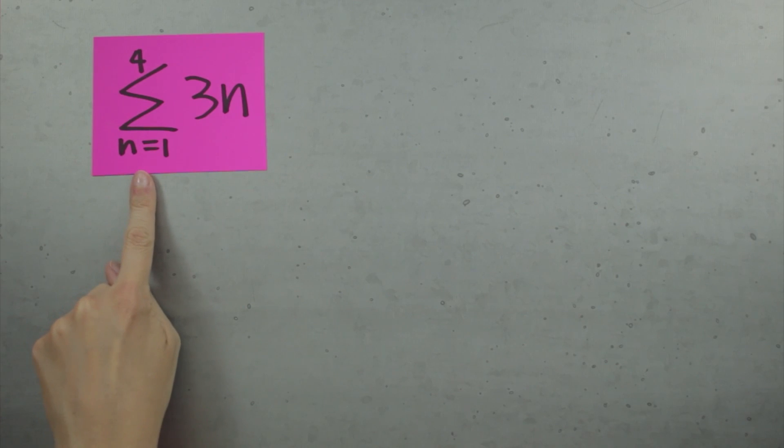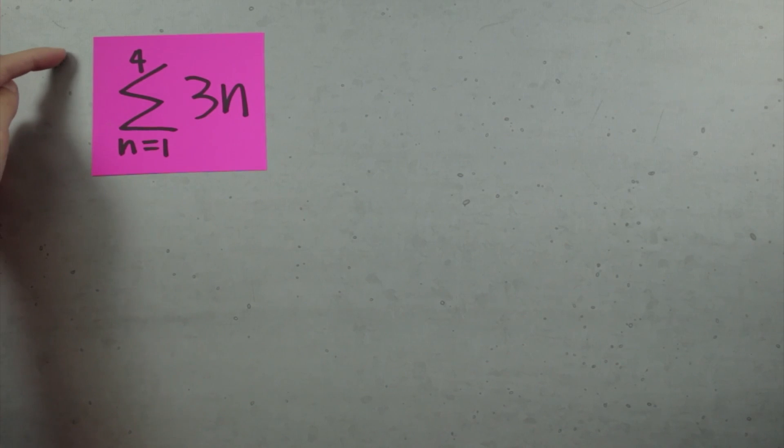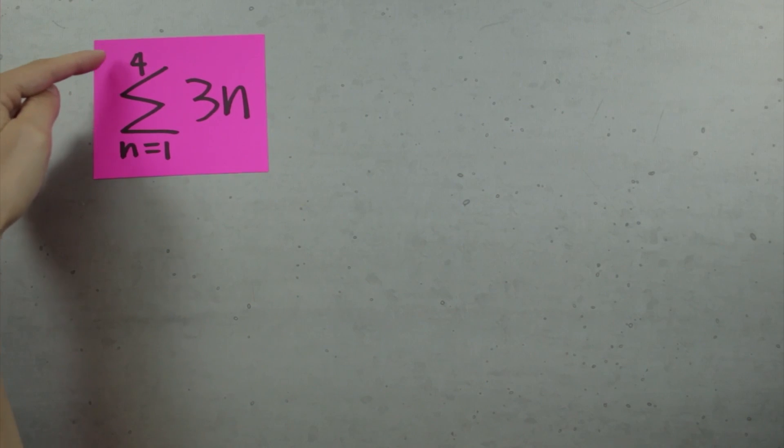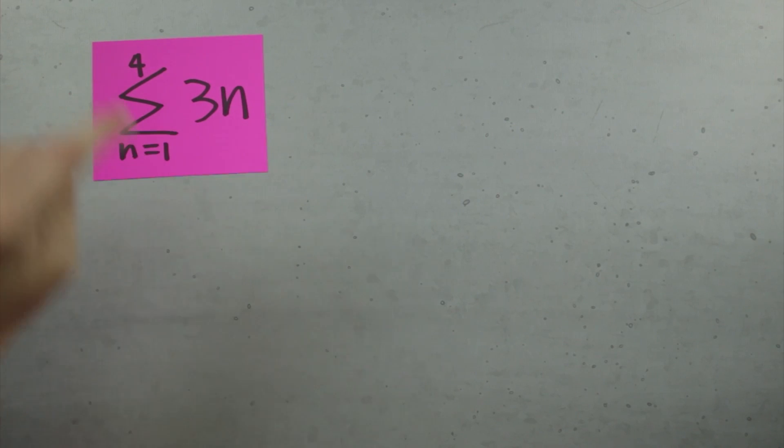n equals 1 tells us to start by plugging in n equals 1. 4 tells us to stop when we get to n equals 4, and the sigma symbol tells us to add. 3n is the function that represents each term in the sequence of the multiples of 3.